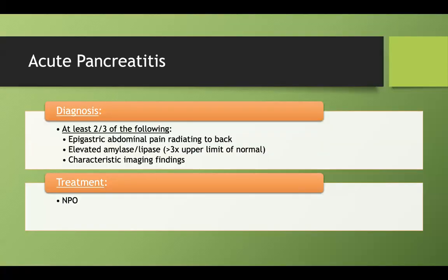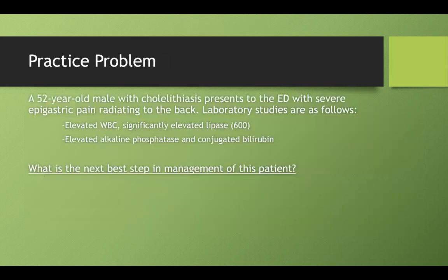Treatment: make the patient NPO (no food, as eating worsens the problem), give IV fluids to counteract the intravascular volume loss from inflammation, and provide pain control. The old guideline against morphine due to sphincter of Oddi spasm has not been strongly supported by evidence.